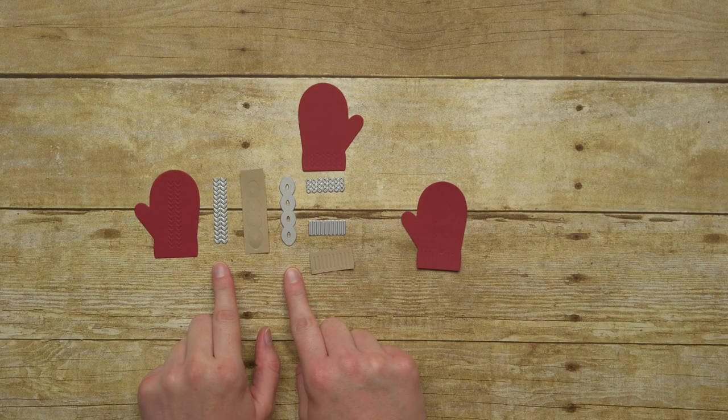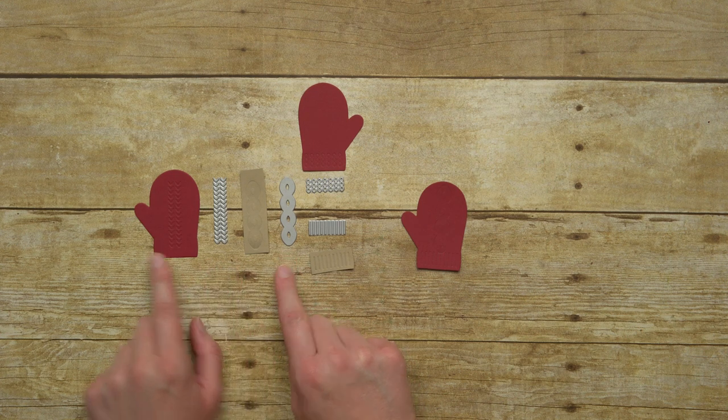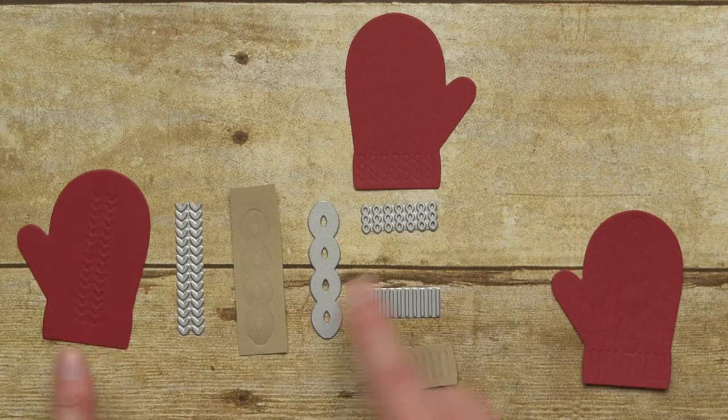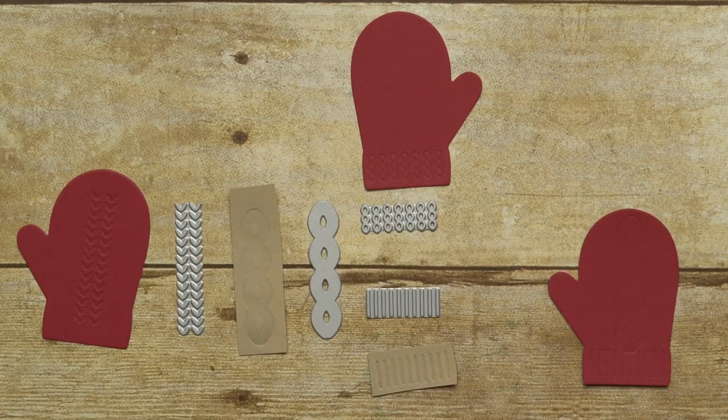The framelits also include some dry embossing pieces and I'm going to show you how that works in just a second, but you can see it just dry embosses the paper to add a little extra detail. So let me show you how to do that.